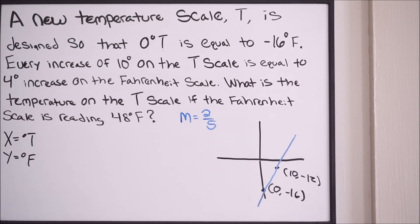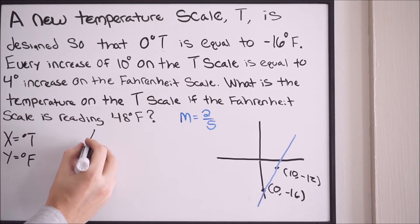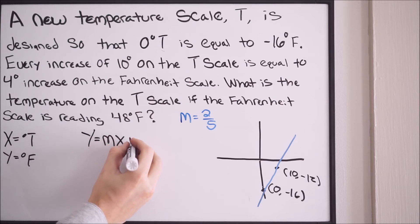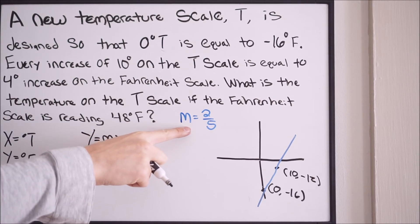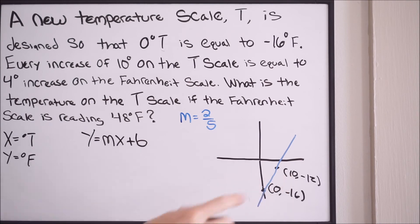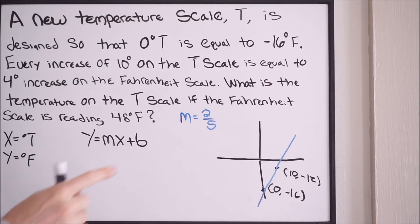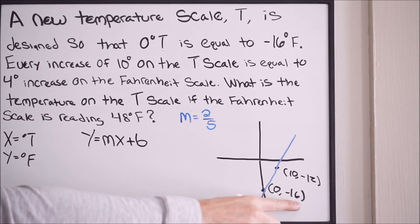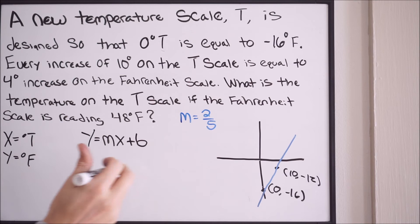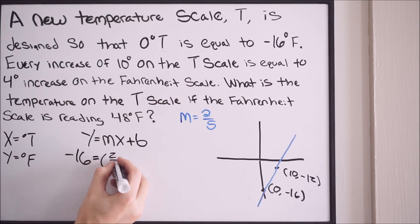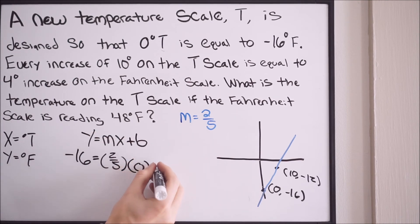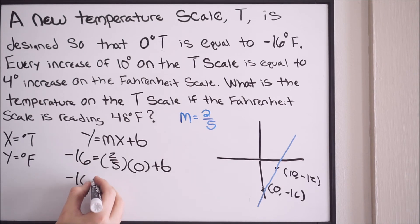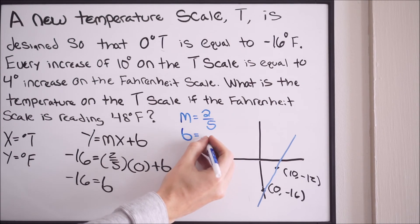Since we're dealing with a line, we use slope-intercept form: y equals mx plus b. We have our slope, and we'll pick a point to plug in and solve for b. I suggest picking the point with a 0 since zeros are easy to work with, so we use (0, -16). Plugging in: negative 16 equals (2/5) times 0 plus b, so b equals negative 16.